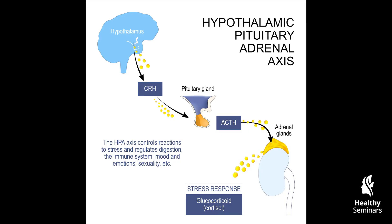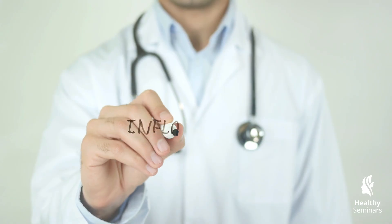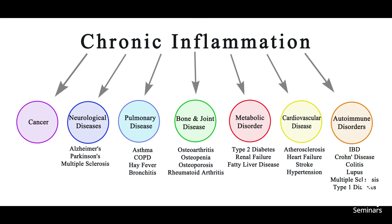This effect explains why acupuncture can lower stress levels, regulate blood pressure, and improve sleep quality in individuals with chronic stress or insomnia. Additionally, acupuncture with Qi arrival has been shown to regulate the immune system by reducing pro-inflammatory cytokines such as TNF-alpha and IL-6 while increasing anti-inflammatory cytokines, suggesting benefits for autoimmune conditions, chronic inflammation, and tissue repair.